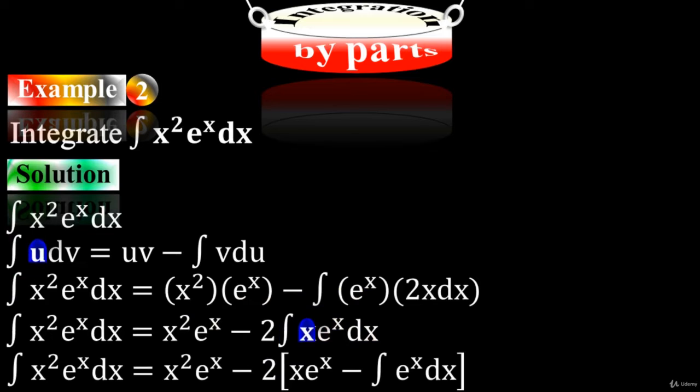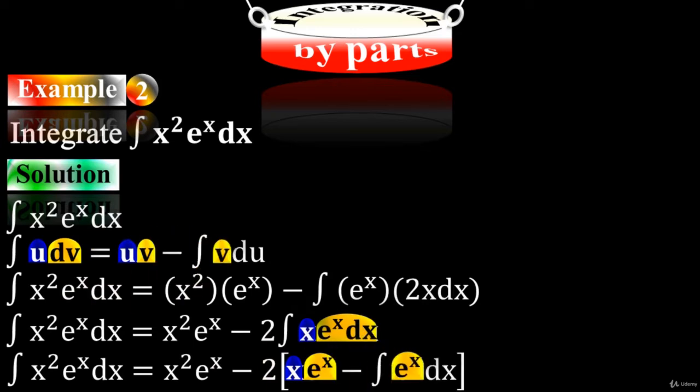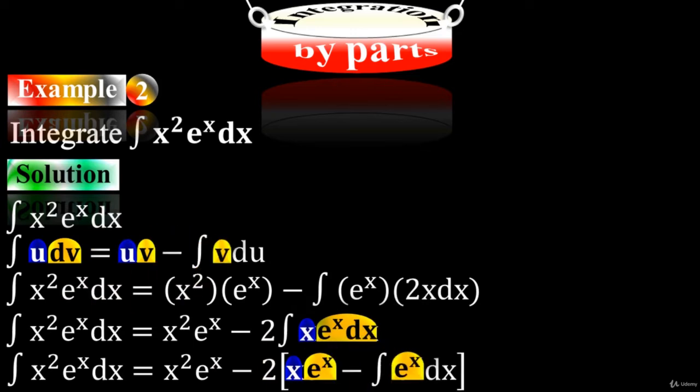For this second application: x is our u, and e to the x is dv. We leave x as it is, times the integral of the second term e to the x, minus the integral of the second term e to the x times the derivative of the first term. Our first term is x, so the derivative of x is 1, giving us dx.